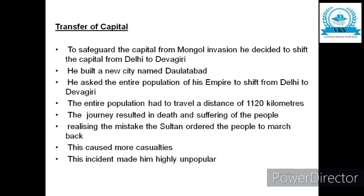The second reform was the transfer of capital. To safeguard the capital from Mongol invasion, he decided to shift the capital from Delhi to Devagiri. He built a new city named Daulatabad in Devagiri and asked the entire population of his empire to shift there. The entire population had to travel a distance of 1,120 kilometers. This journey resulted in death and suffering. Realizing his mistake, the Sultan ordered the people to march back, which caused more casualties and made him unpopular. This administrative experiment also failed.